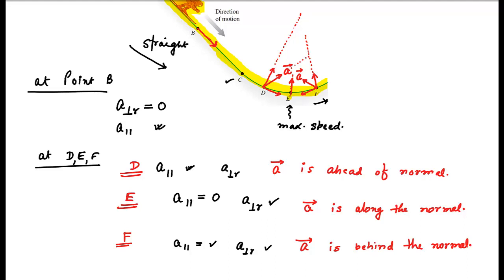So in this video we learned how to show the direction of acceleration of an object moving on a curved path. There are two components: the parallel component tells about change in speed, and the perpendicular component tells about change in direction. At point B on the straight line, the perpendicular component is zero. At points D, E, and F on the curved path, we have both normal and tangential components — except at point E where the parallel component is zero since speed is not changing. At point D the acceleration is ahead of the normal, and at point F it is behind the normal.